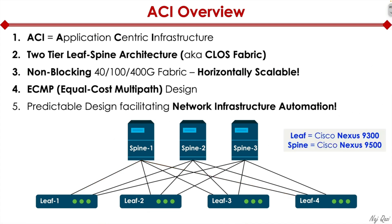When it comes to the Cisco data center switch portfolio, you have the Nexus 9K class of switches. For leaf switches, you can buy the Nexus 9300 — there's a huge variety of options within the 9300 family. From the spine perspective, you have the Nexus 9500, available in different form factors like the 9504, 9508, and 9516, giving you modular chassis options to support the spine role.